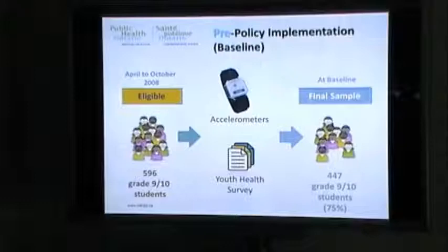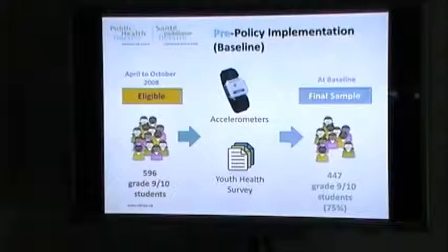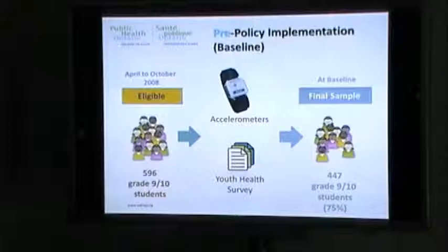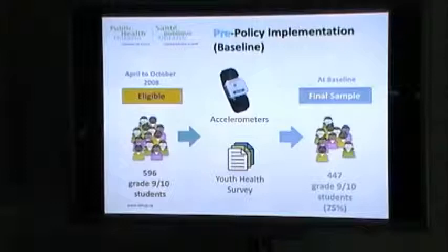Our baseline data collection happened between April and October 2008, before the Manitoba phys ed policy was implemented, and we successfully recruited 596 grade 9 and 10 students. We asked them to wear accelerometers for seven consecutive days and to complete a health survey. At baseline, we had 447 students return their accelerometers with quality data usable in our analysis.